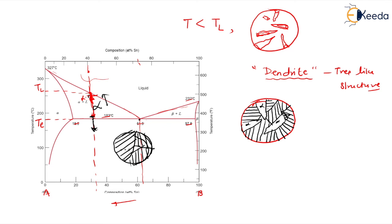In this layer-by-layer structure, the black color represents alpha and the white thickness represents beta. Just below T, alpha is already present in the lamellar form with beta. Above TE up to TL, the alpha is grown in the dendritic fashion. So please remember that there are two alphas present here — one in the dendritic fashion and one in the layer-by-layer fashion.